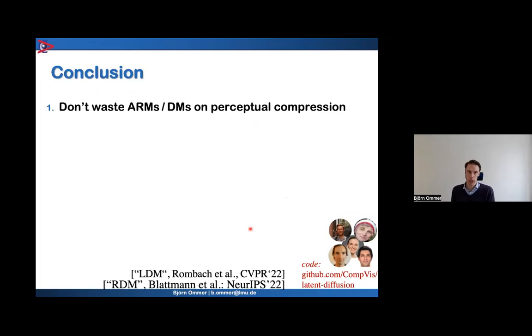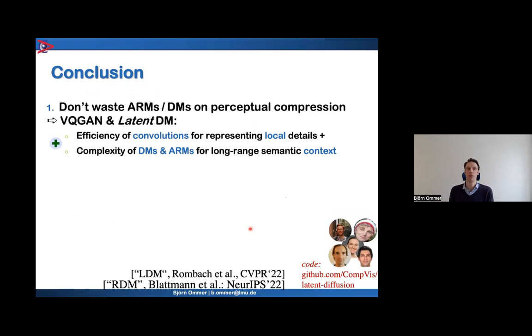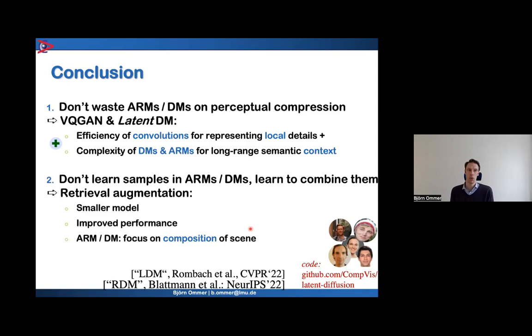I believe you should not waste powerful generative models these days on perceptual compression tasks. Standard convolutions are much better at representing local details. Rather, have the diffusion models and autoregressive models concentrate on semantics, on long-range context. And secondly, don't learn the actual samples in the autoregressive or diffusion models. Rather, have these models learning how to combine such samples, but not how to render the samples themselves. That typically, this retrieval augmentation, typically leads to a much smaller model. It improves the performance. And the autoregressive model can then concentrate on what it's really good at. And that also allows for a very convenient post-hoc transfer. So after the model has been trained, transfer of the model to novel domains that you have never seen during training.